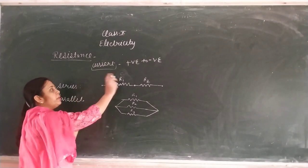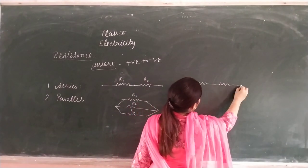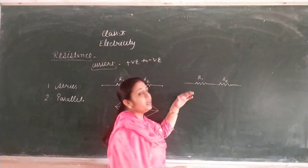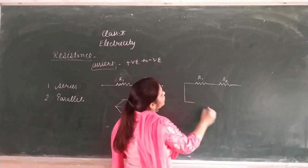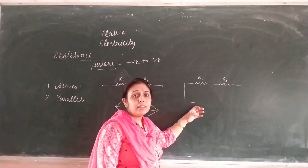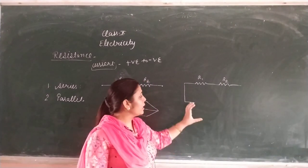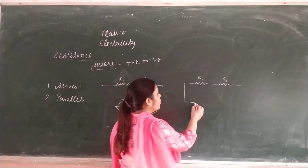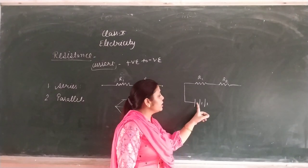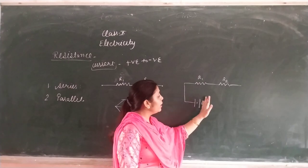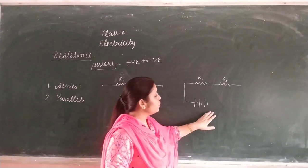Now let's look at what happens in the series. Suppose I connect it with a battery — R1 and R2. Current will pass, so we need an external source. What do we call it? Battery. The difference between a cell and a battery: if you increase the number of cells, that combination of two or three cells is called a battery. The big terminal is positive and the small one is negative. A single positive and one negative is called a cell. Combination of cells is called a battery.